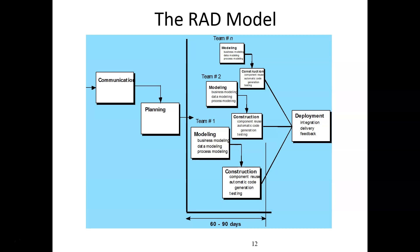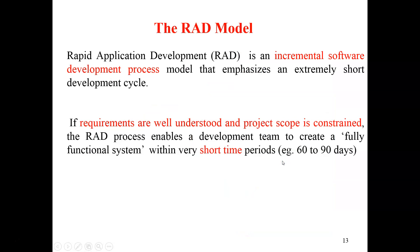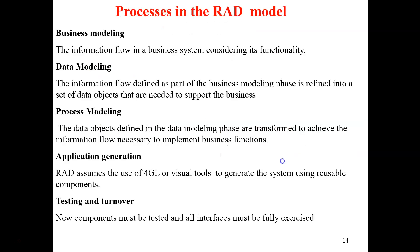Next is Rapid Application Development (RAD). In RAD, several teams work with increments with a short life cycle of 60 to 90 days to deliver the system. RAD is an incremental software development process where you deliver the system within a short life cycle. If requirements are well understood and the project is constrained, you can use RAD. This is very suitable for short time periods.